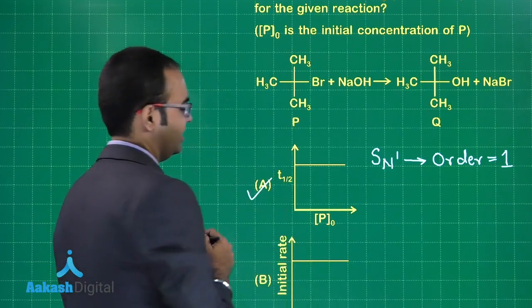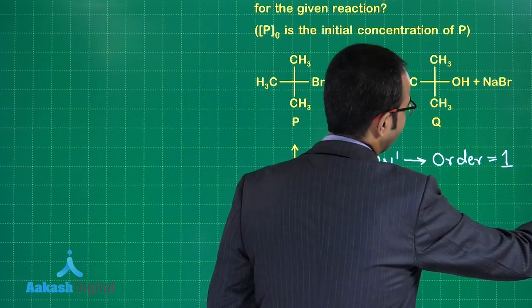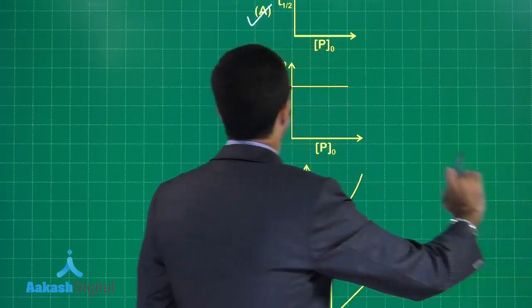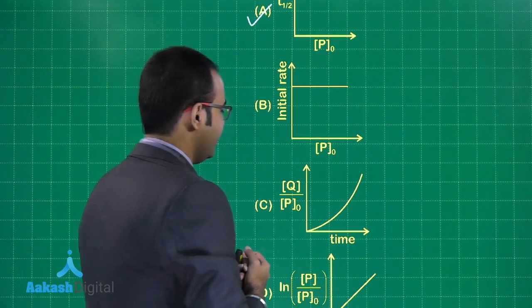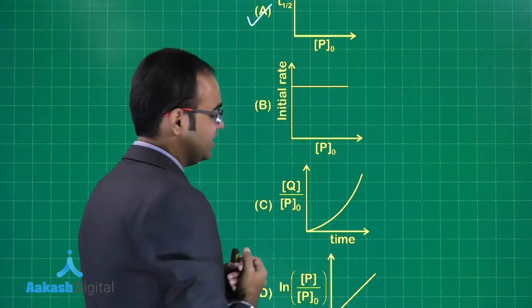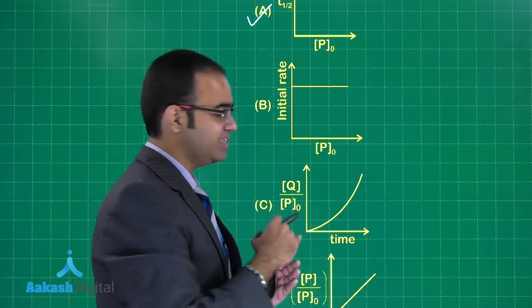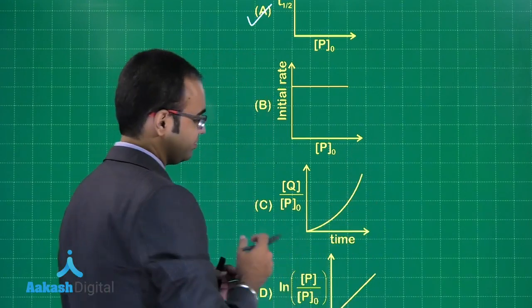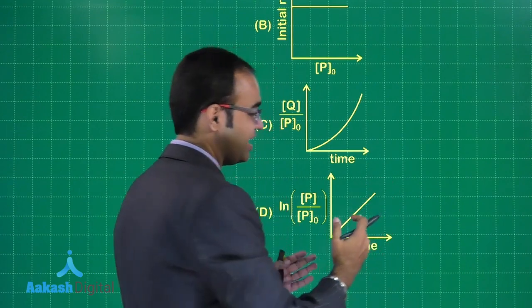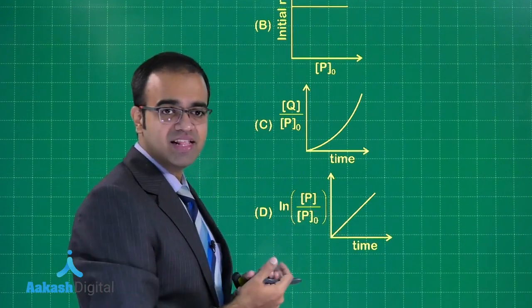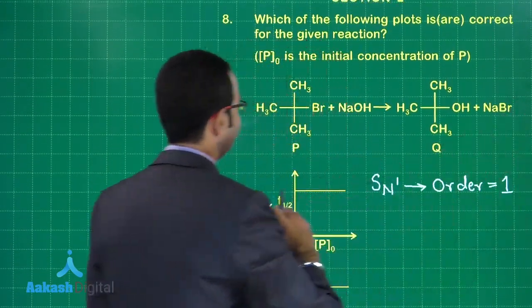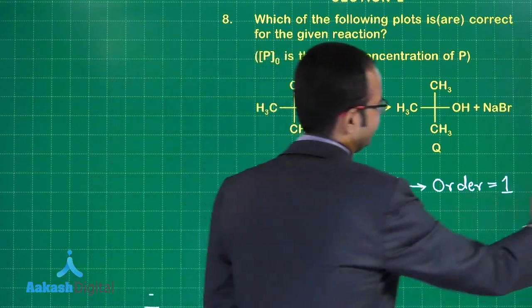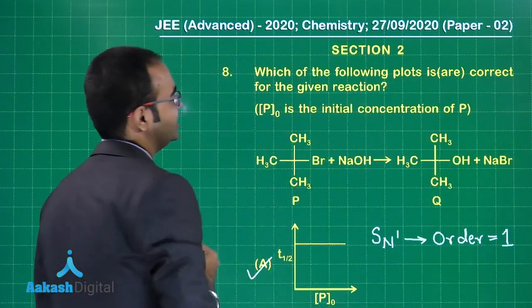What about the rest of the options? The initial rate is not independent of P₀ — initial rate will depend on P₀, so that is incorrect. Q/P₀ is not increasing linearly; it will be an exponential graph that increases and becomes constant. And P/P₀ is not increasing with time — it would be decreasing with time. So the answer is only option A.